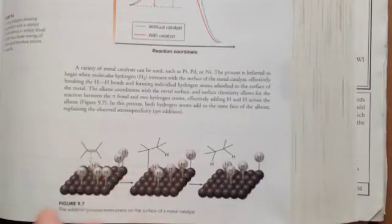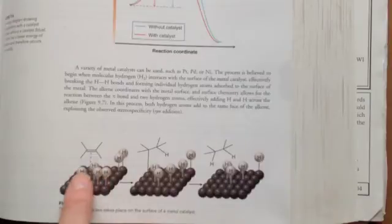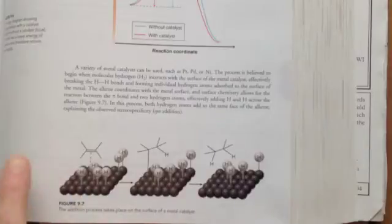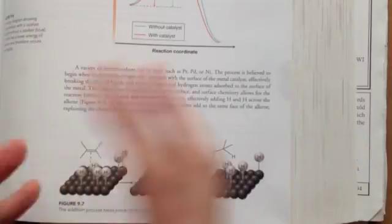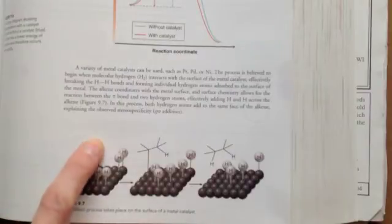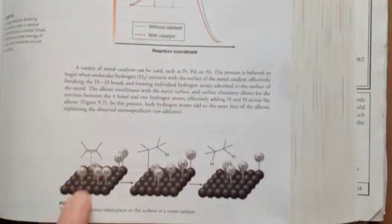And the metal surface will break apart the hydrogen-hydrogen bond, so you get individual hydrogen atoms that are just hanging out, stuck on the surface of the metal. And then, as the reaction is taking place, the molecules are flying around, and alkene will also come down and bump onto the surface of the metal.